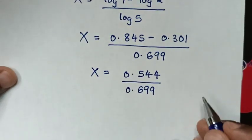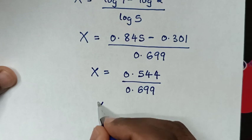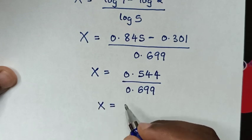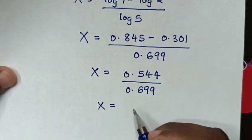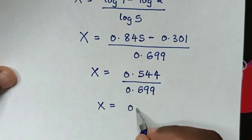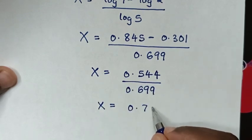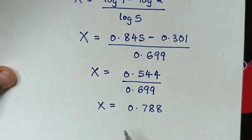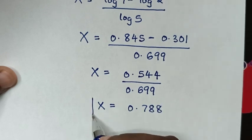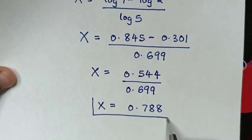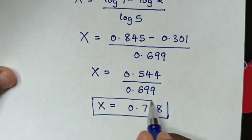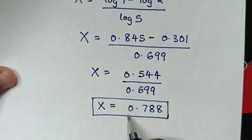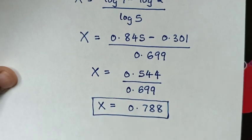Then in the next step, it will be x is equal to 0.788. Therefore, this is the correct answer for the value of x in this problem, which is 0.788.